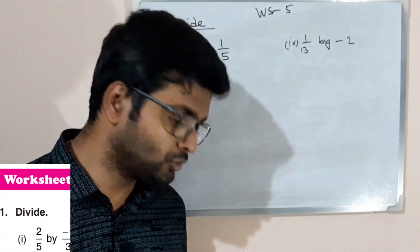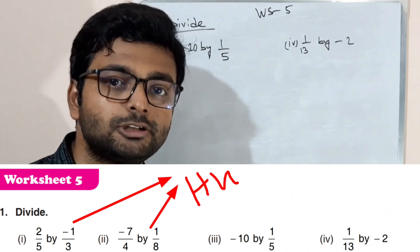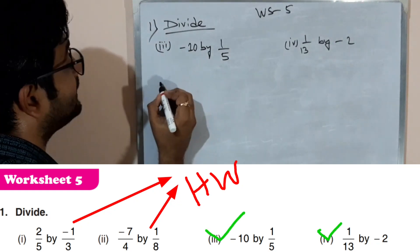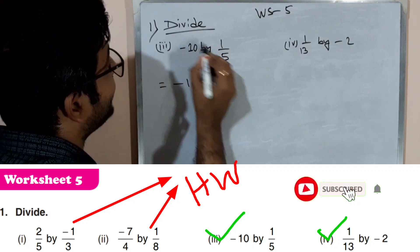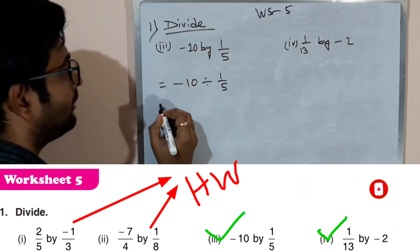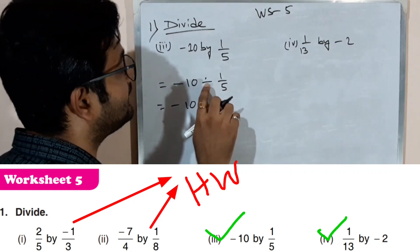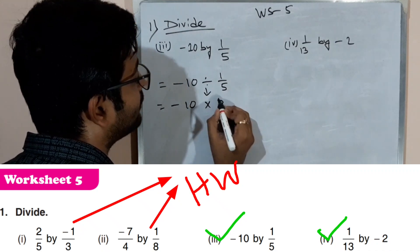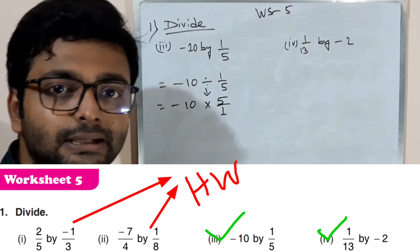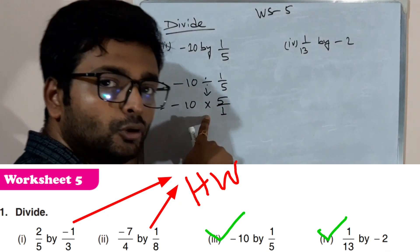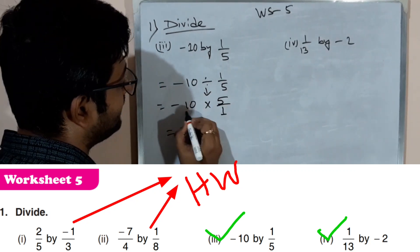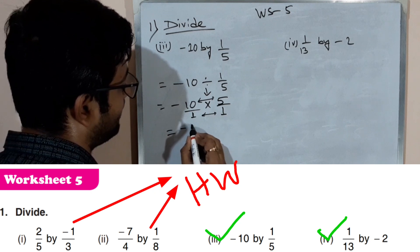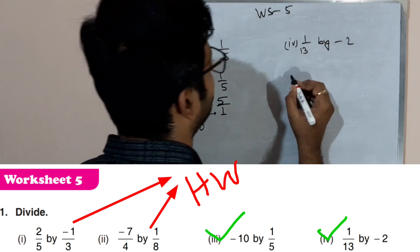Now let's do the worksheet. For the first two sums you will find it easy. For the third sum: minus 10 divided by 1 by 5. We do not change minus 10; we change the divide sign to multiply and write the reciprocal of 1 by 5, which is 5 by 1. Nothing can be cancelled, so multiply: 5 into minus 10 equals minus 50 by 1, so the answer is minus 50.